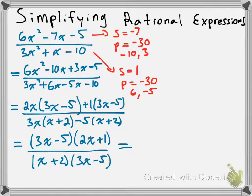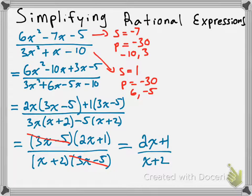Now, you might notice that at the top and the bottom we have 3x minus 5 on both of them. Having a factor of 3x minus 5 on the top and on the bottom means they are going to cancel each other out. So, we can cancel out the entire 3x minus 5 factor from the top and the bottom, and that's going to leave us with 2x plus 1 over x plus 2.